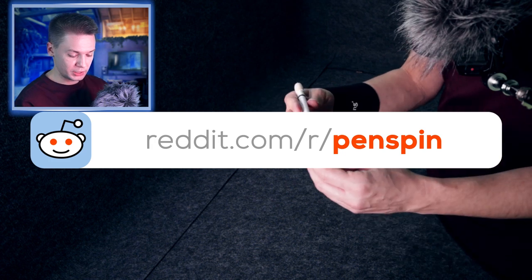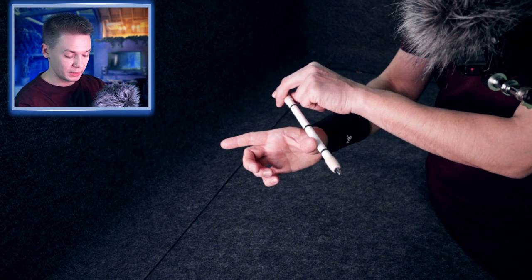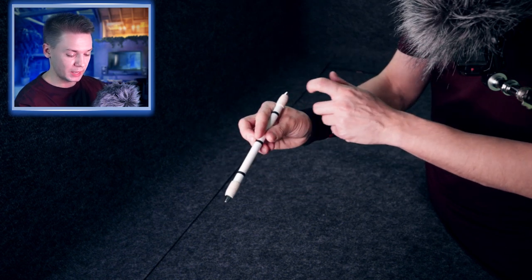And to finish thumb spin you just need to make the gap between index and thumb bigger and pen should drop to this gap.